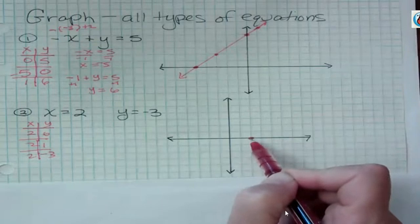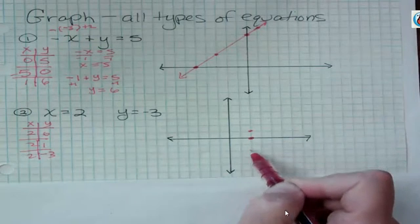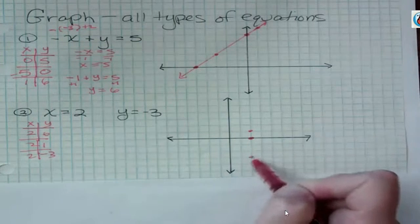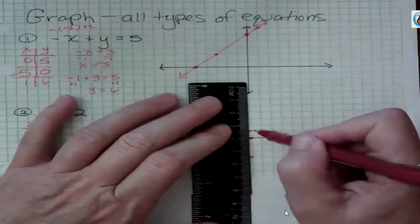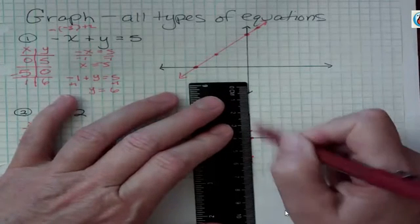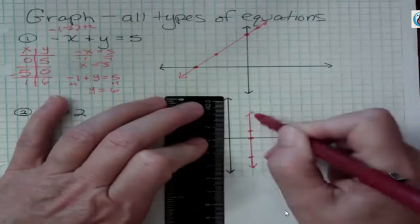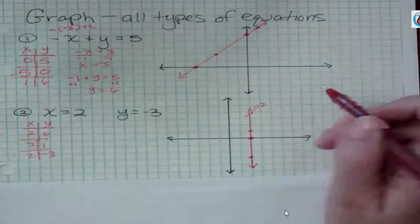x is 2, y could be 1. x is 2, y could be negative 3. But when we have x equals a number, we say x equals k, like some constant number, then we're always going to get a vertical line at that number. So x equals 2 would look like that.